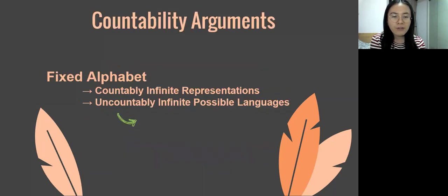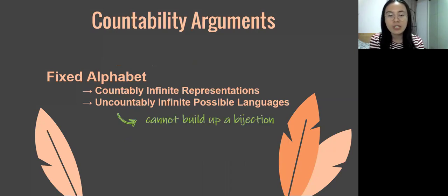For a fixed alphabet, it can produce countably infinite finite representations. However, the set of all possible languages over the alphabet is its superset, which is uncountable. We cannot build up a bijection from the finite representations to the languages, and hence there must be some languages unable to be represented finitely.